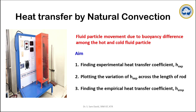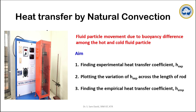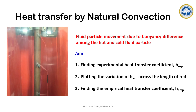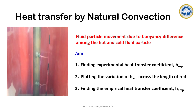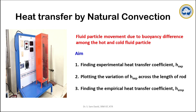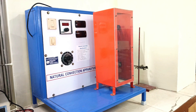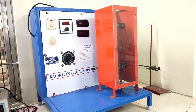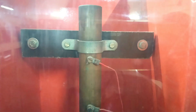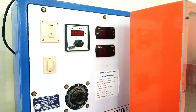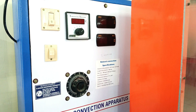In this experiment, there are three objectives: one is to find the experimental heat transfer coefficient; second is to find the variation of heat transfer coefficient across the length of the heater rod; and third is to find the empirical heat transfer coefficient for the same experimental conditions. This is the apparatus used to study the natural convection phenomena. Inside this chamber, you can see a metal rod fixed inside, fitted with multiple thermocouples to monitor temperature.